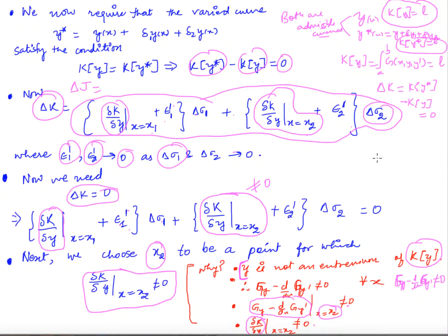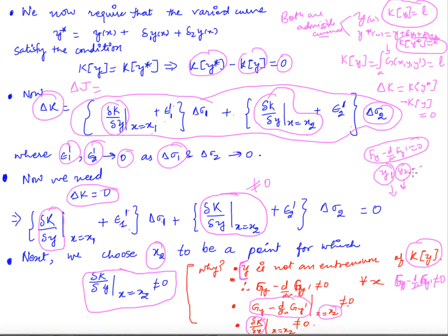One important note: Euler's equation is only a necessary condition. The equation f_y - d/dx(f_y') = 0 gives solutions y₁, y₂, etc. — there can be many solutions — and some may be extrema while others may not, since this is not a sufficient condition. I am assuming here that we are dealing with cases where whatever we obtain from Euler's equation is indeed an extremum. There are examples of functionals where a solution of Euler's equation is not an extremum, but I am not considering that case.